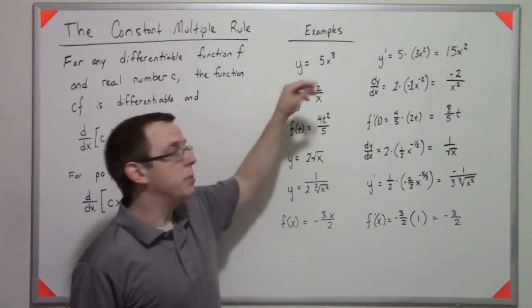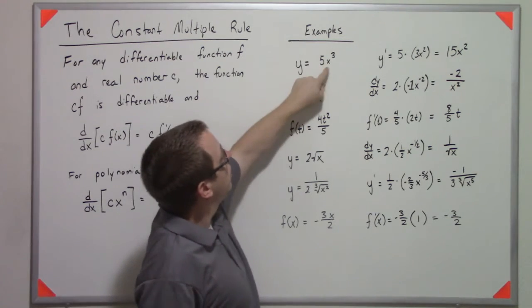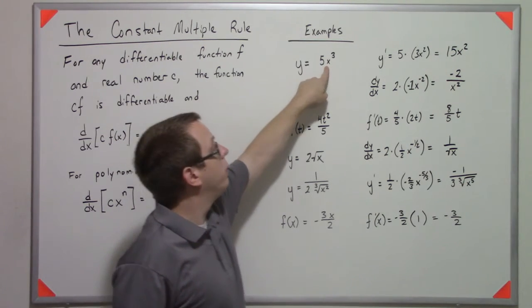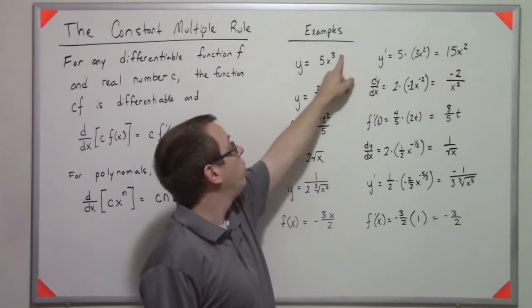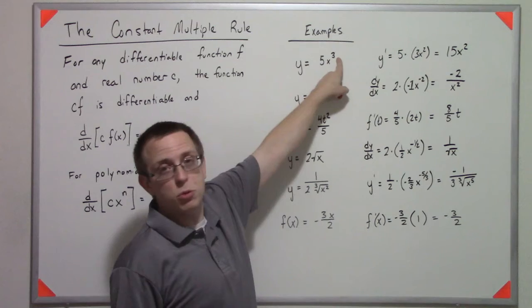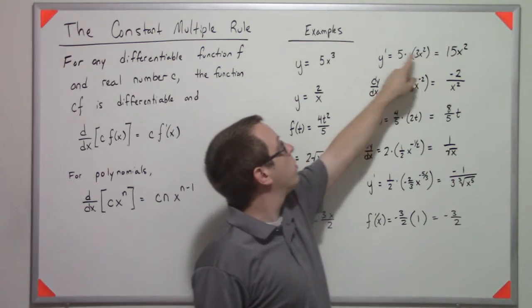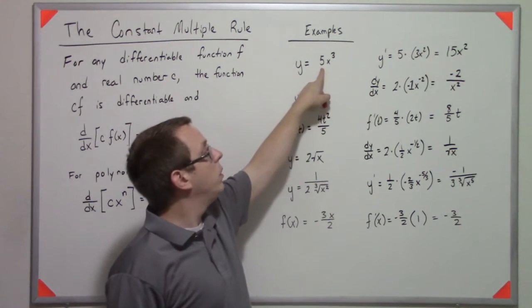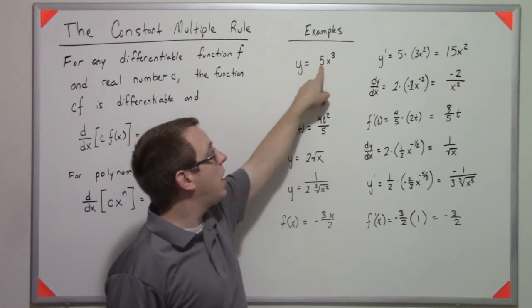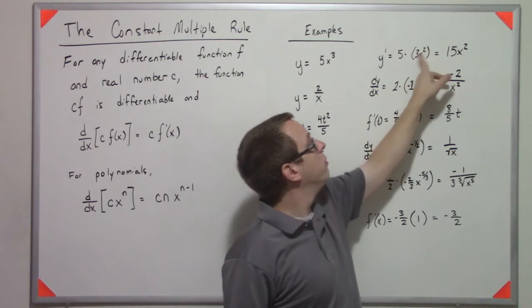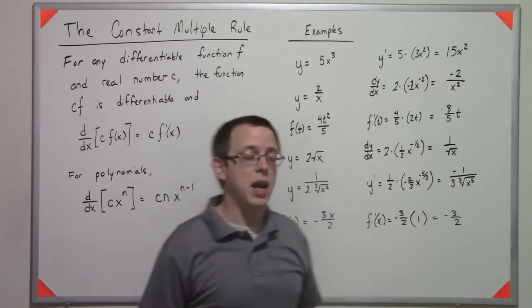So let's take a look at some examples. This is 5x cubed. We know that the derivative of x cubed is 3x squared by the power rule. We bring the 3 down and subtract 1 from the power. That's how we get 3x squared. So by doing that first, we can multiply the 5 by its derivative to get the final value of 15x squared.